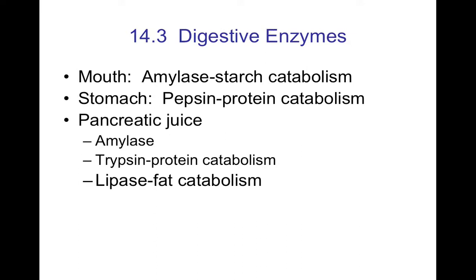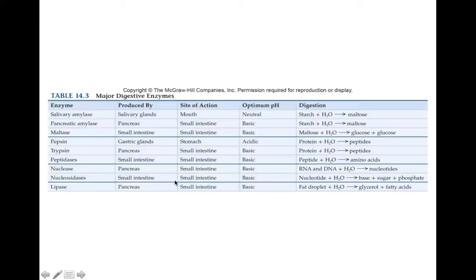You'll want to be familiar with the various digestive enzymes: amylase metabolizes starch, pepsin metabolizes protein, trypsin metabolizes protein, and lipase metabolizes fat. There is a schematic from the text showing the optimal pH for each of these enzymes, where they work, what they're produced by, and what they digest.